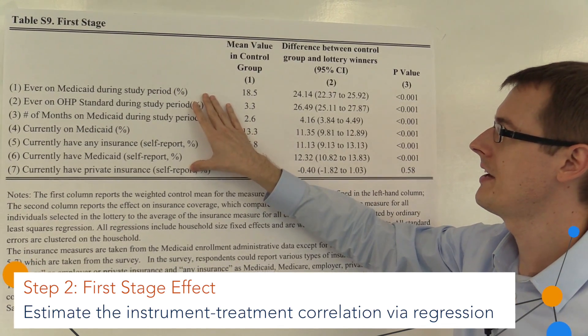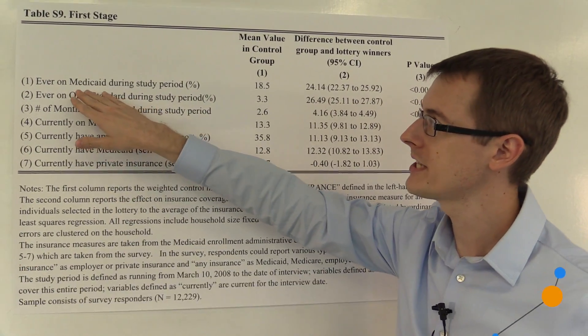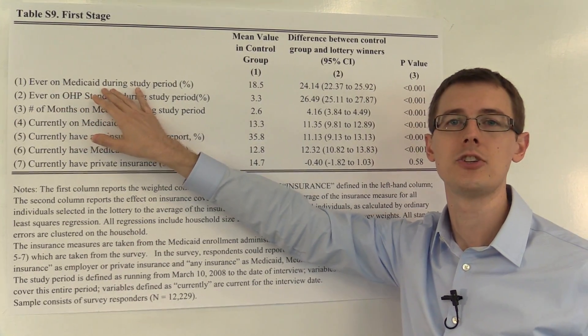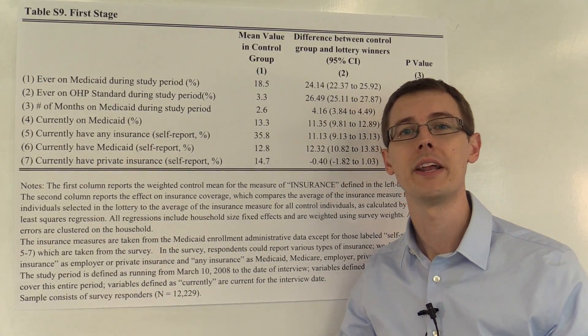Here, on the left-hand side, we have different measures of treatment. For example, let's focus on the first line. Did you ever get Medicaid during the study period? So did you receive Medicaid? That's our treatment.